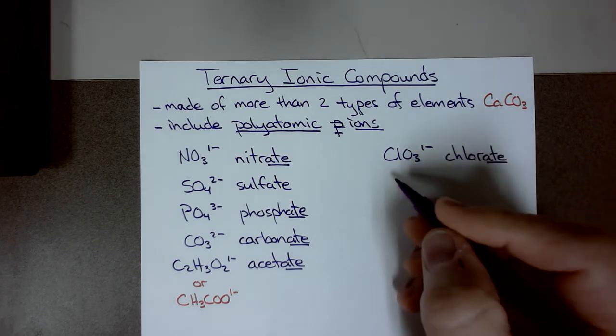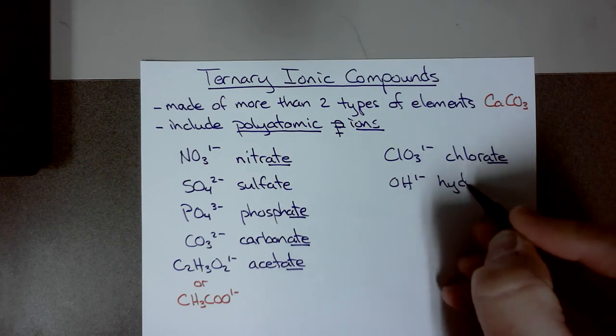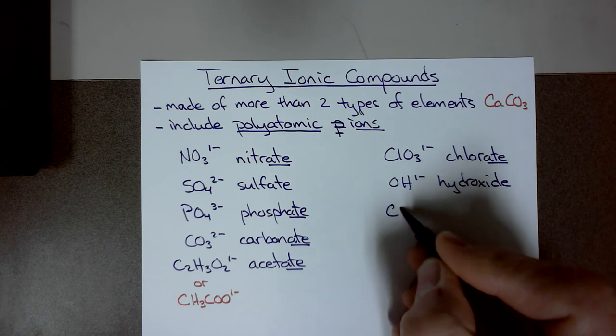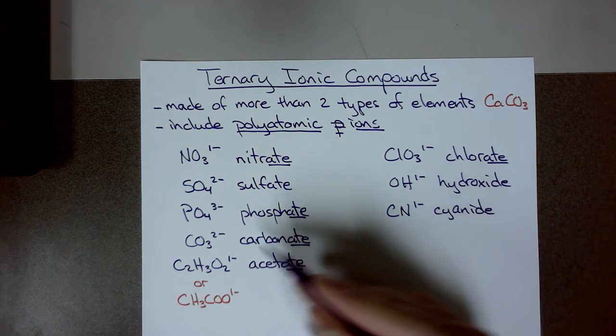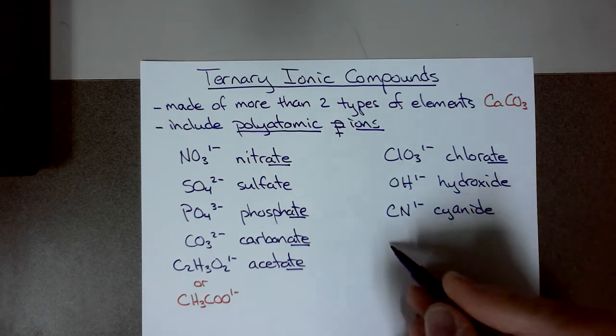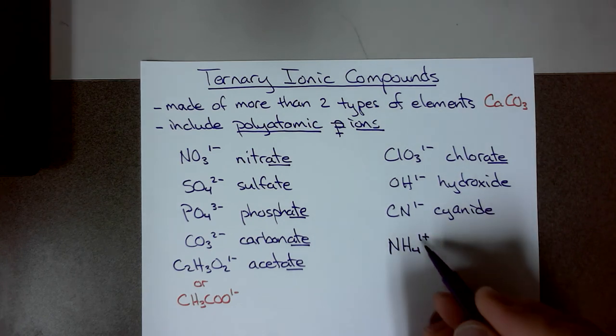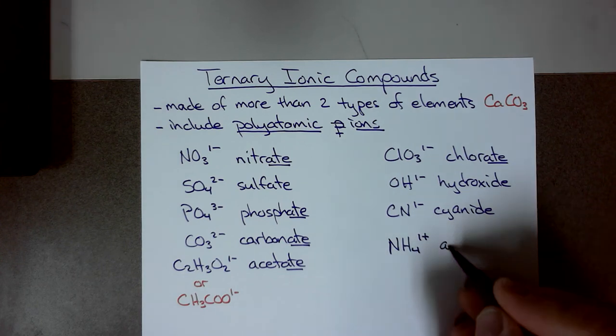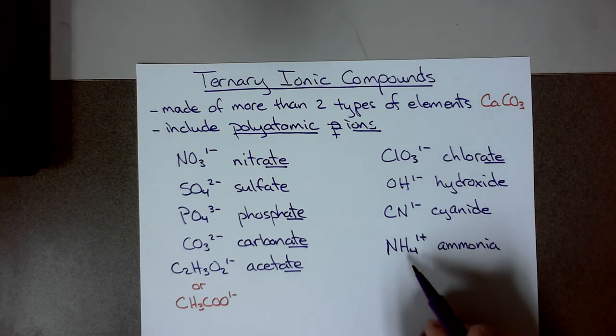Now these others that I'm going to show you are not oxyanions. We have hydroxide, that's OH 1 minus. Then we have cyanide, that's CN 1 minus. And the last one, the ninth most common one would be NH4 1 plus. And this is the only cation, the only polyatomic cation. And this is ammonia. And this is the cation that would be written in an ionic compound that is not a metal. So every other time, a positive charge will be the metal. But this is the cation that can be written as part of an ionic compound that is not a metal.